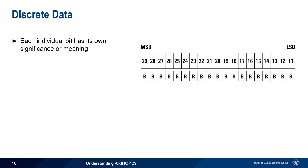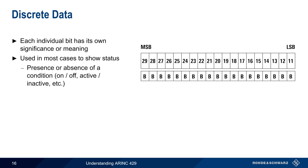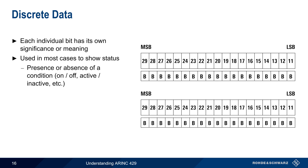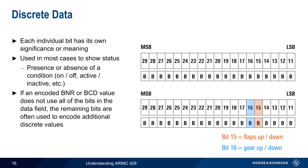The last major data type in ARINC 429 is discrete data, where each individual bit of the data field has its own meaning or significance. Most often this is used to show status — the presence or absence of a condition, such as on or off, active or inactive. For example, the value of bit 15 could show whether flaps are up or down, and bit 16 could show whether landing gear is up or down. ARINC 429 data fields can also be hybrid, or a mix of formats, and unused bits in a BNR or BCD data field are commonly used to encode various discrete, bitwise information as well.